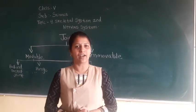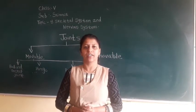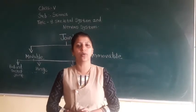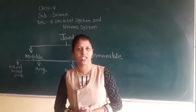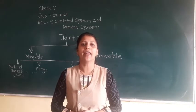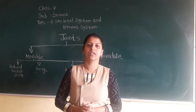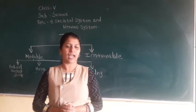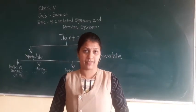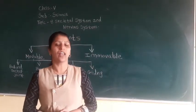We have also discussed the rib cage. The rib cage is found in the chest and it protects our heart and lungs. The rib cage has 12 pairs of ribs.